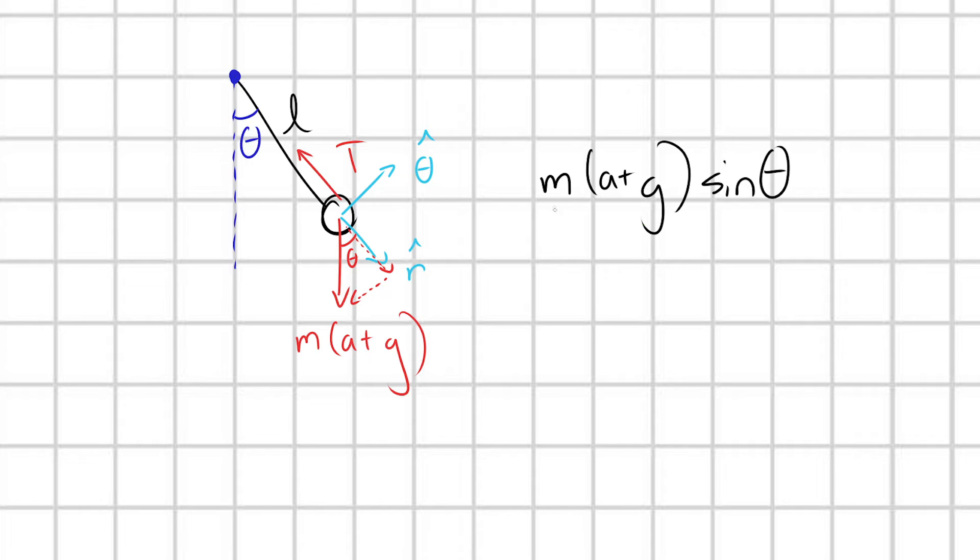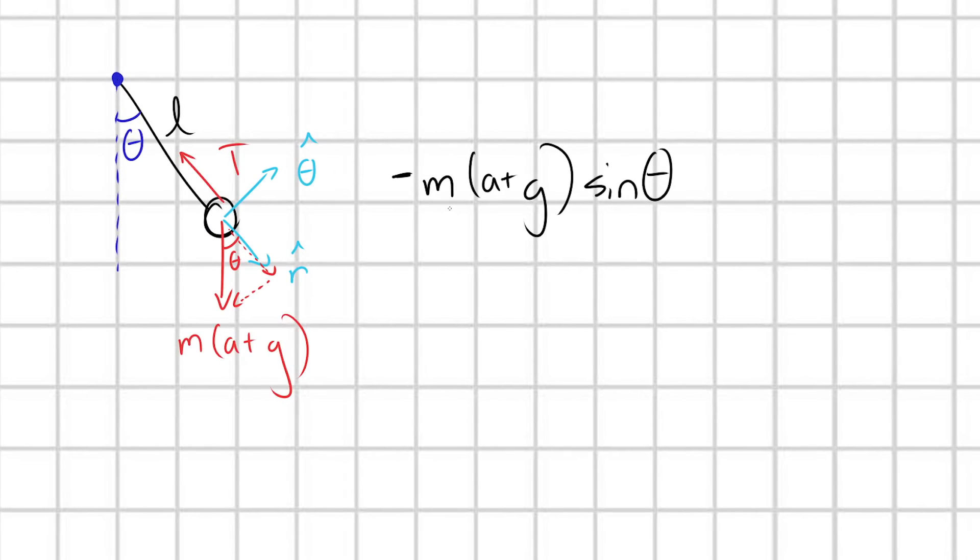And so my force in the theta hat direction is going to look like M times A plus G sine theta. And is this force in the positive theta hat direction or the minus theta hat direction? Oh, that's right. It's in the minus theta hat direction. That's what we just said. And so this is going to be equal to M A. What is A? What is my acceleration in the theta hat direction? My acceleration in the theta hat direction is going to be equal to theta double dot, my angular acceleration times the length of my pendulum L.